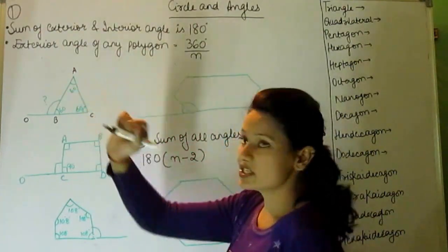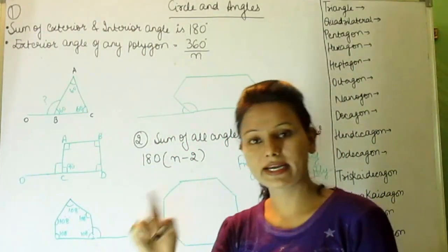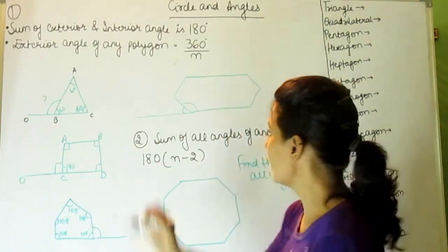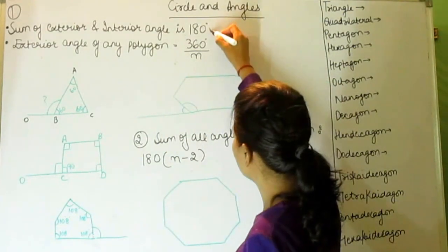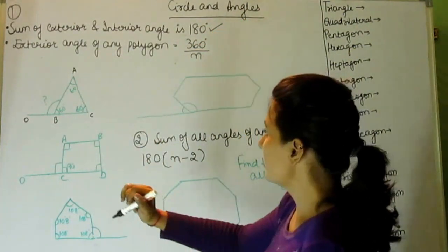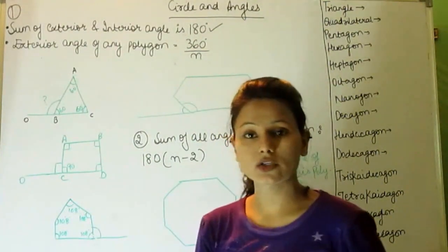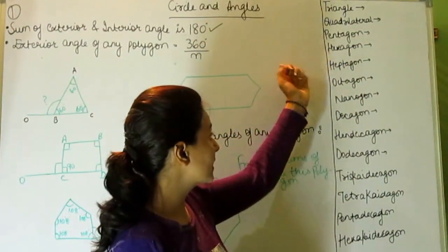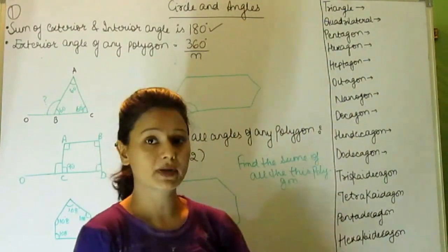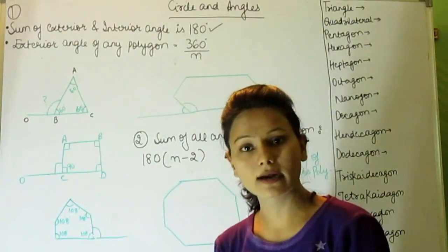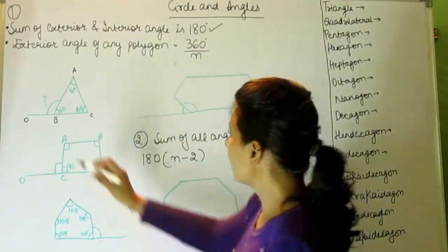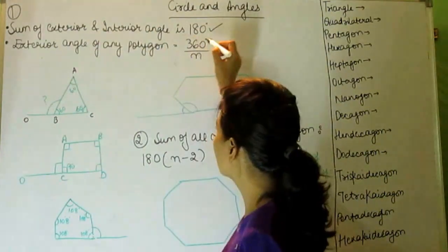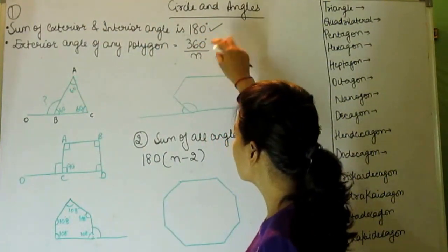Any exterior angle and interior angle together sum to 180 degrees. The exterior angle of any polygon — whether it is a triangle, quadrilateral, pentagon, hexagon, heptagon, octagon, or decagon — the exterior angle is 360 divided by N.